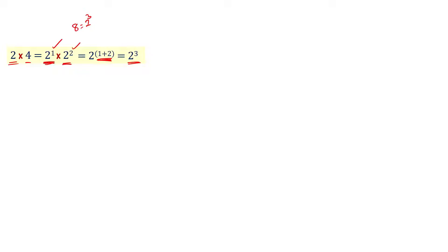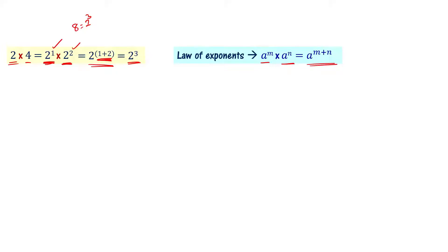So 2 power 1 times 2 power 2 equals 2 power 1 plus 2. The law of exponents tells us: a power m times a power n equals a power m plus n. This is one of the laws of exponents.